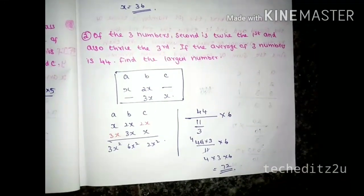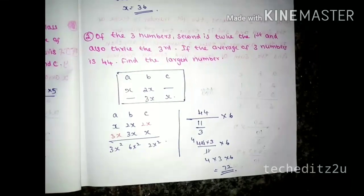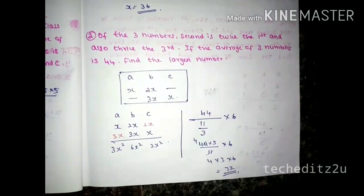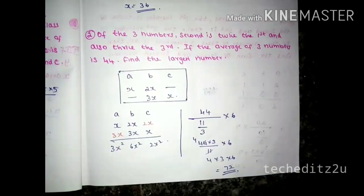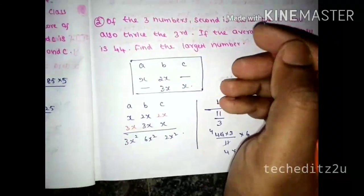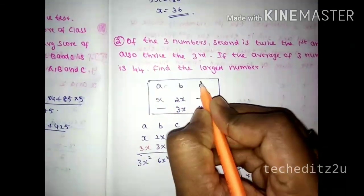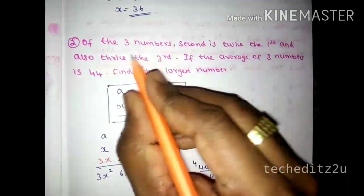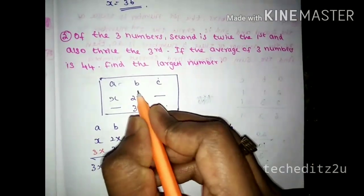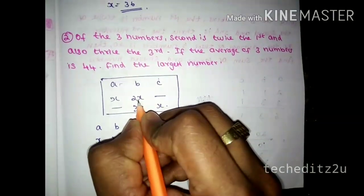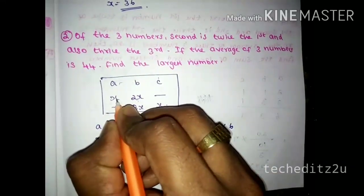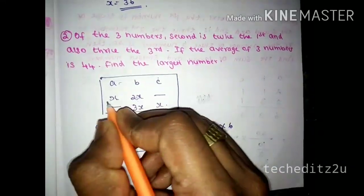Second question: of three numbers, the second is twice the first and also thrice the third. If the average of three numbers is 44, find the largest number. The three numbers are a, b, c. Second is twice the first, so b equals 2a.